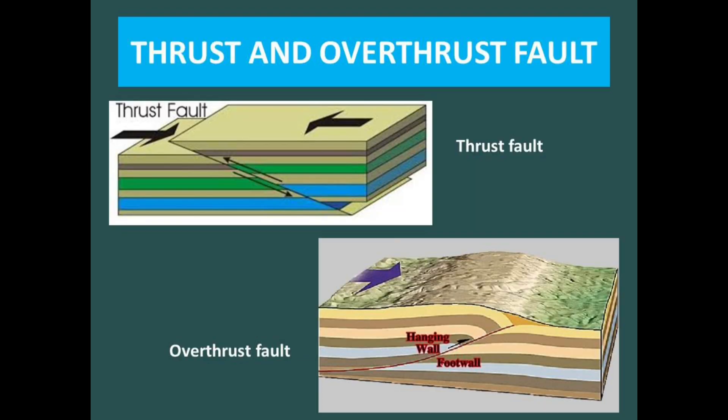Reverse fault is further divided into thrust and overthrust fault depending on the angle. If the angle is greater than or equal to 45 degrees, the fault is called a reverse fault. If the angle is less than 45 and greater than 10 degrees, it is called a thrust fault. If the angle is less than 10 degrees, it is called an overthrust fault.